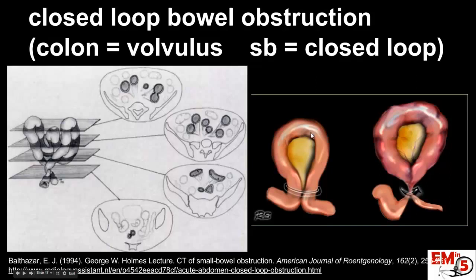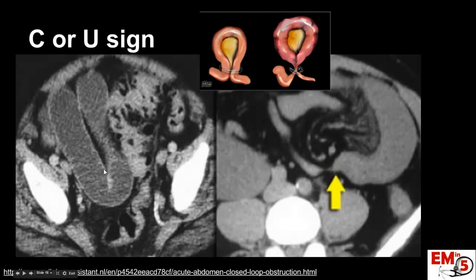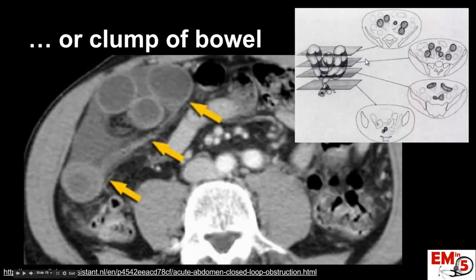We might actually see the loop — it could look like a U or a C shape. Or if we're looking at it on cross section, we can see little clusters of bowel. Here's the U sign, here's the C sign, and here's the cross-sectional view where we see dilated bowel loops with some edema and ascites around them — all concerning for a closed loop obstruction or strangulation.